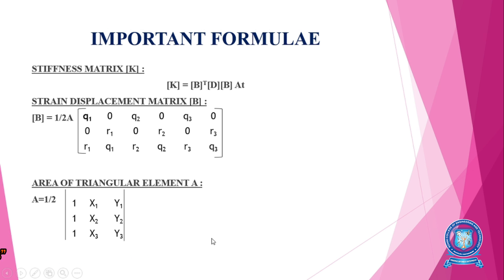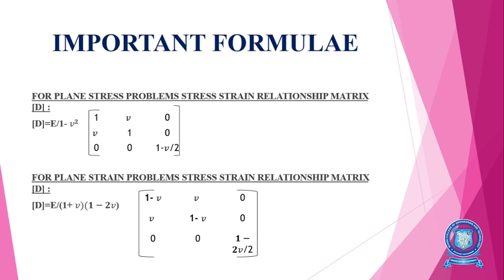The area of the triangular element is: A = (1/2) × det([1, x1, y1; 1, x2, y2; 1, x3, y3]), where (x1,y1), (x2,y2), (x3,y3) are the coordinates of the triangular element.